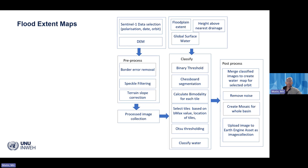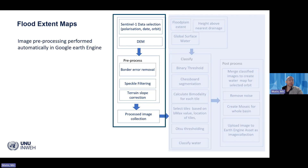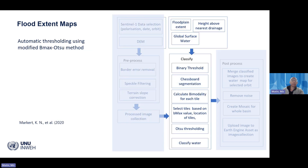The flood extent mapping methodology begins with Sentinel-1 data and the DEM processed in Google Earth Engine. Pre-processing steps include terrain slope correction, speckle filtering, and border noise removal to generate a processed image collection for further analysis. Using these pre-processed images, we apply automatic thresholding using a modified bimodal OTSU method introduced by Markert in a 2020 paper, with some modifications.